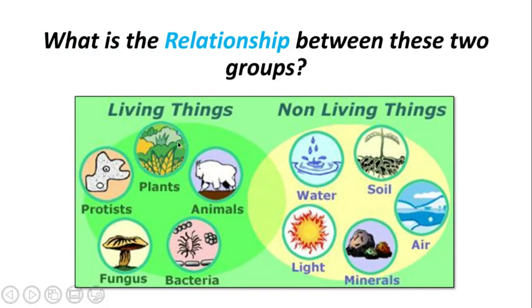Ecology is the study of relationships between living things and their environment. We have living things: plants, animals, bacteria, fungus — they all relate to each other. Producers live in the soil, plants grow there, they transfer the sun's energy into a usable form known as glucose. Animals come along and consume that, and other animals will come and eat those animals.